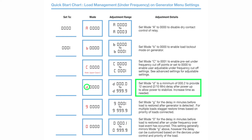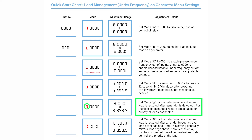Menu D should be set to 0.2 for a 12 second startup delay. Menu G should be set to 2.5 for your highest priority load. This will provide a two and a half minute delay before the load is restored after generator power has been detected.